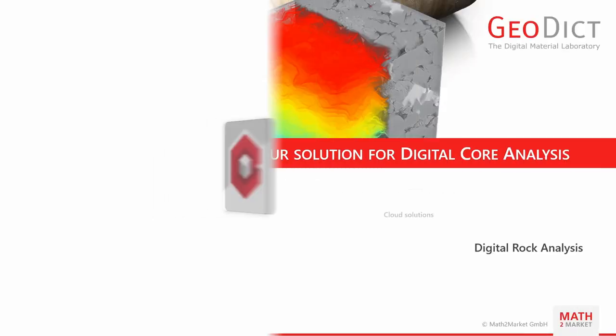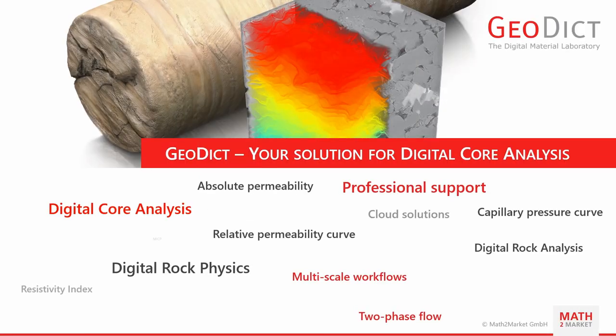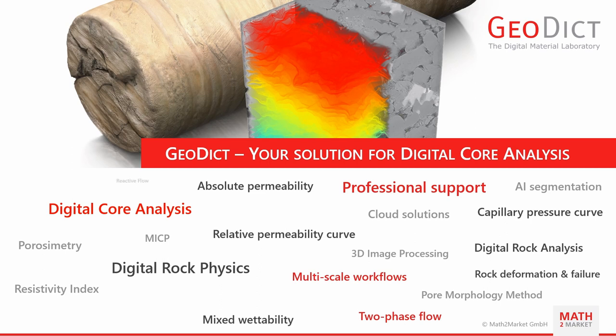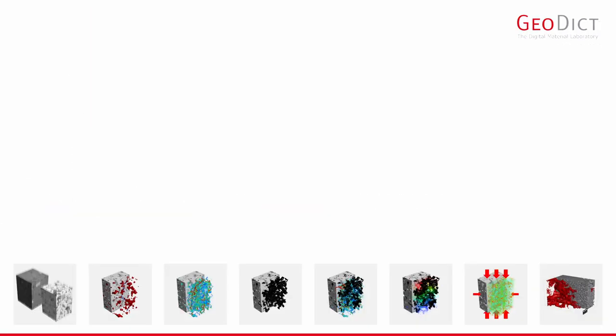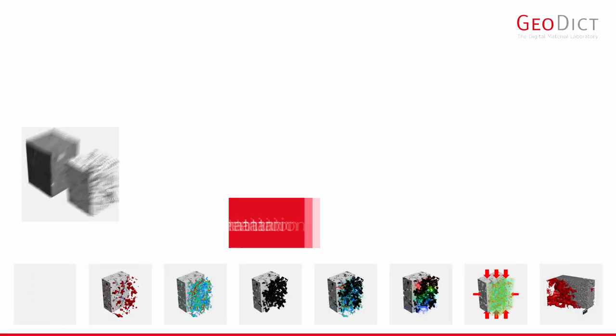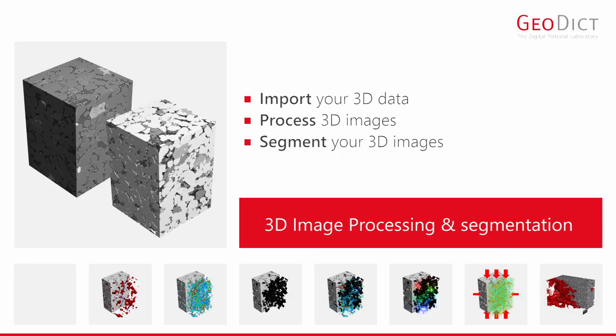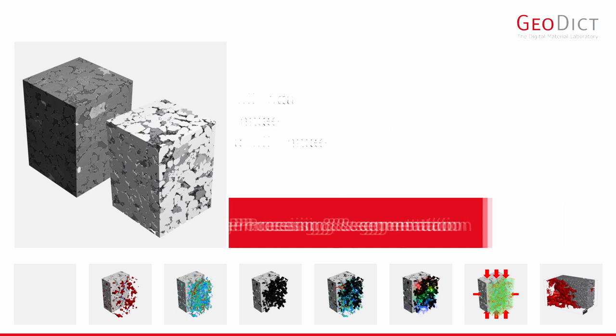The GeoDICT software package is the all-in-one solution for digital core analysis. GeoDICT features the import of all kinds of great value images, 3D image processing and segmentation, including AI approaches.